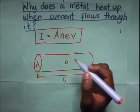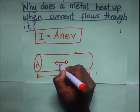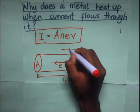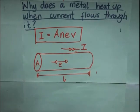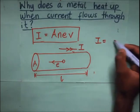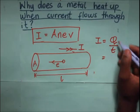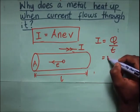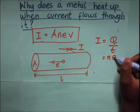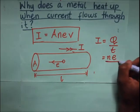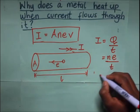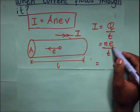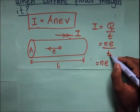We know that current is the rate of flow of charge, so current I equals Q divided by time. The charge Q is equal to the number of electrons times the charge on each electron e, which is 1.6 × 10⁻¹⁹ coulombs, divided by the time taken for an electron to drift from one end to the other. This becomes n × e divided by time.